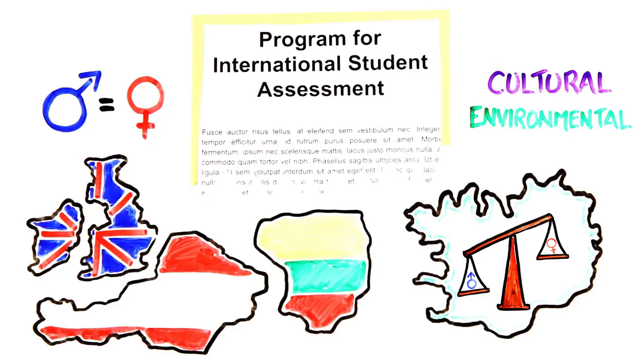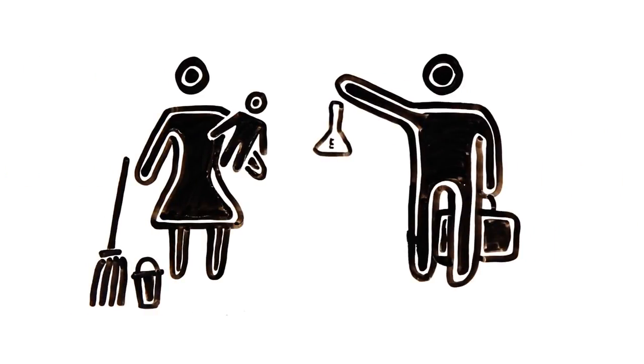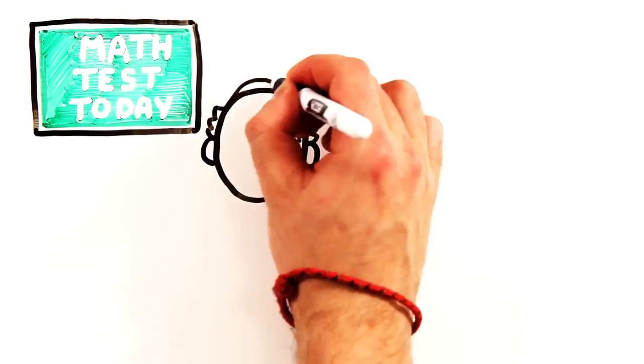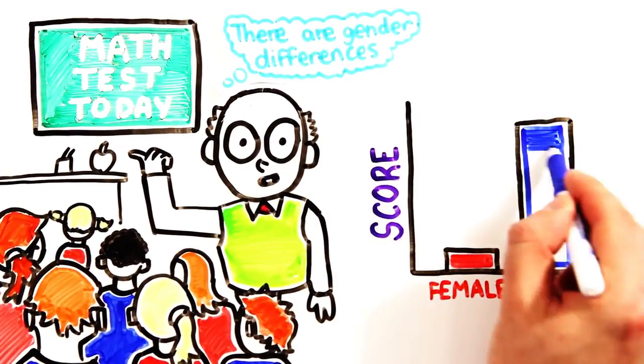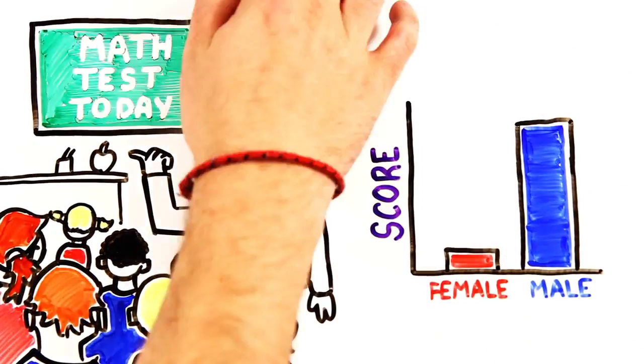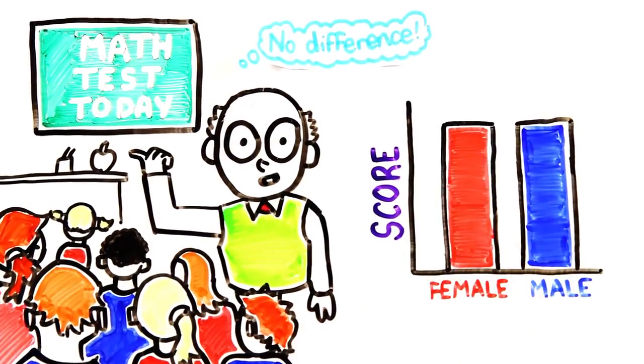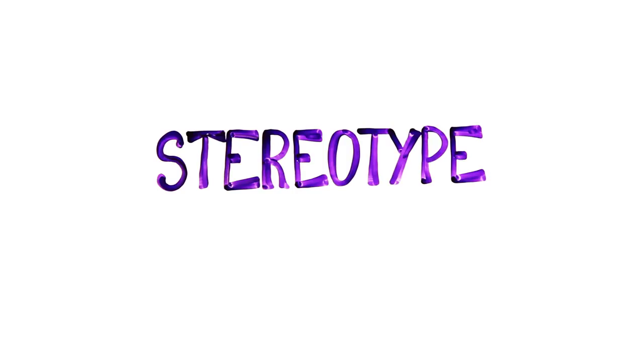But research has found that stereotypes about women's performance actually impact how well they do. When told that a particular math test had significant gender differences, women performed significantly worse than their male peers, while women who were told there was no difference scored the same. This phenomenon is known as the stereotype threat.